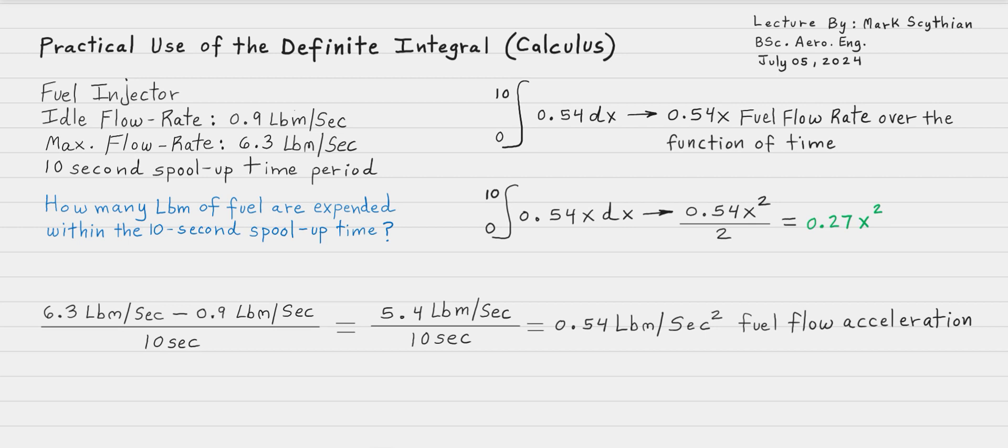That is the total pounds mass over the function of time. To compute this definite second integral, which is now calculating the total pounds mass or the function of time rather than just the fuel flow rate, we can take 0.27x squared and then place the 10-second upper limit value in place of x.